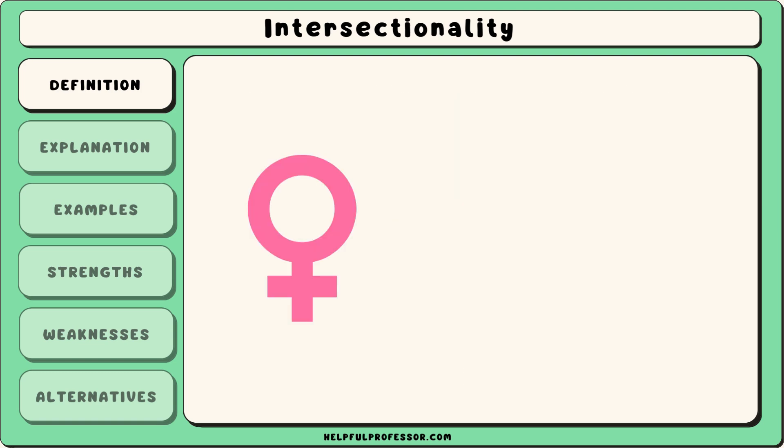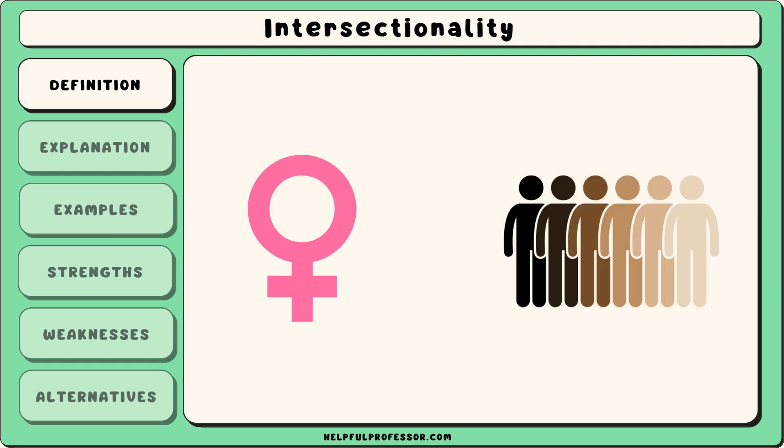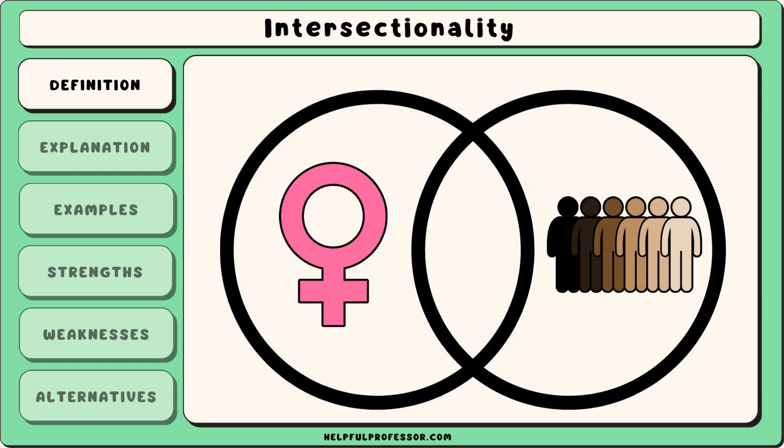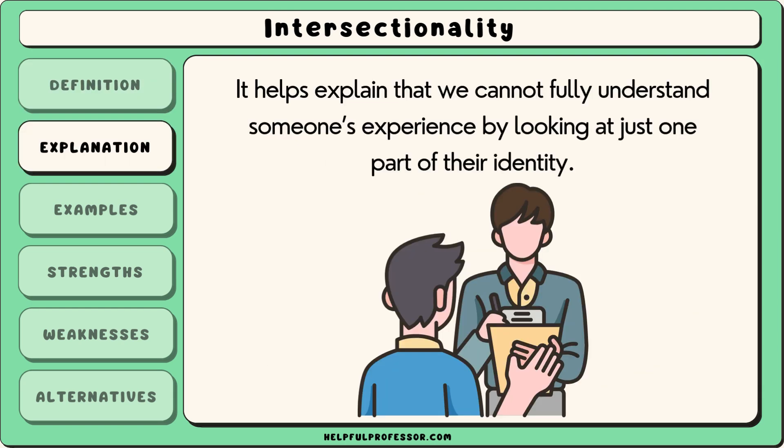For example, someone might face challenges not only because they are a woman, but also because they are a woman of colour, and those two factors together create a different experience than being only a woman or only a person of colour. Intersectionality helps explain that we cannot fully understand someone's experience by looking at just one part of their identity.